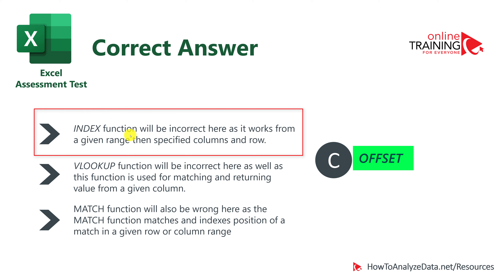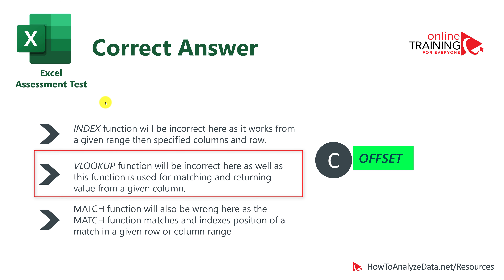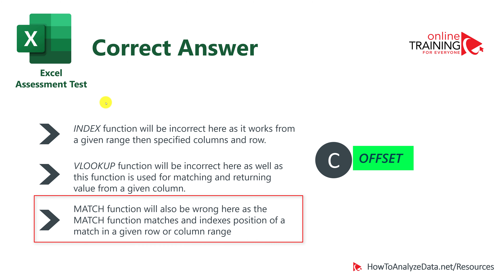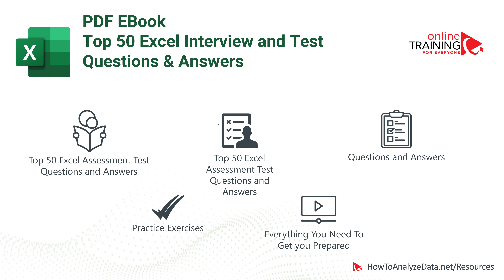Going back to the question, choice C — OFFSET — is the correct answer. INDEX is not correct, VLOOKUP is not correct, and MATCH is also incorrect because it returns the position of a match within a row or column range. This is a more advanced question requiring knowledge of all four functions and understanding their differences. If you'd like to get ready faster, check out the ebook covering the top 50 Excel interview and assessment test questions.